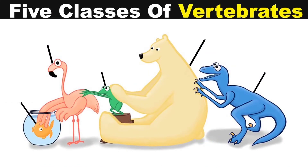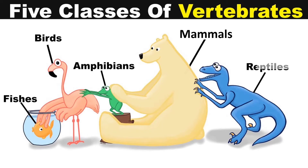Vertebrates are classified into five groups. These are fish, birds, amphibians, mammals, and reptiles.